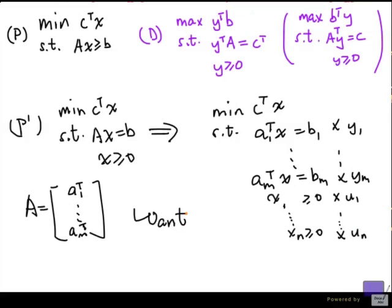Now we want something that looks like c transpose x greater than or equal to gamma by taking this linear combination. Well, in order to get greater than or equal to, it doesn't matter what the sign of these y's are because any time we multiply an equation by a constant, we still get an equation. But we must take u1 up to un to be non-negative.